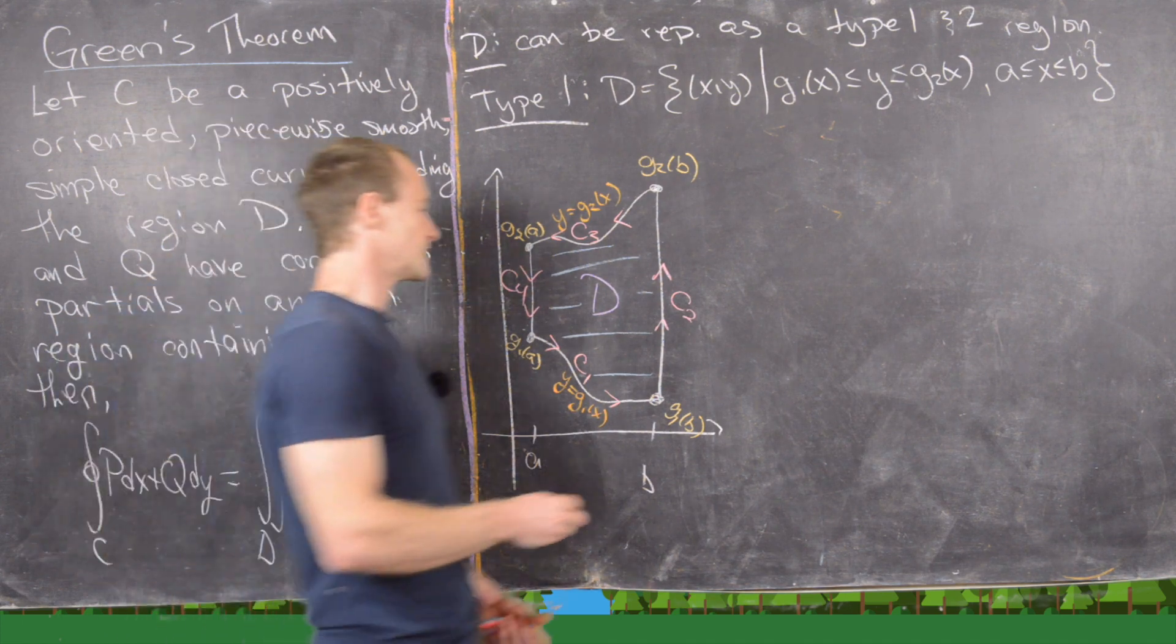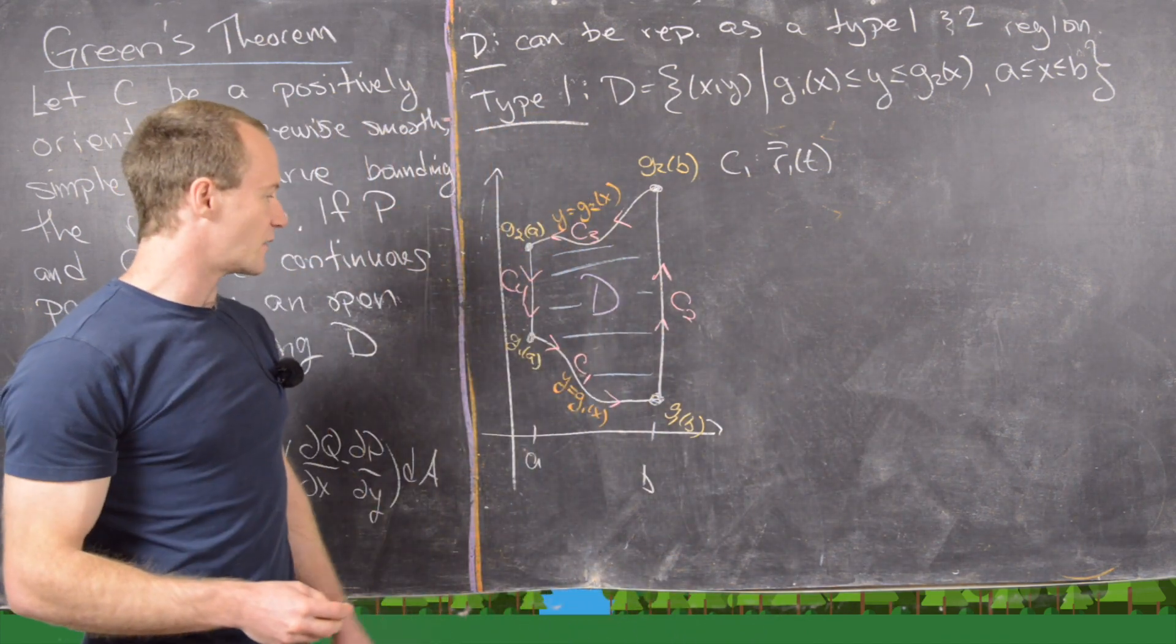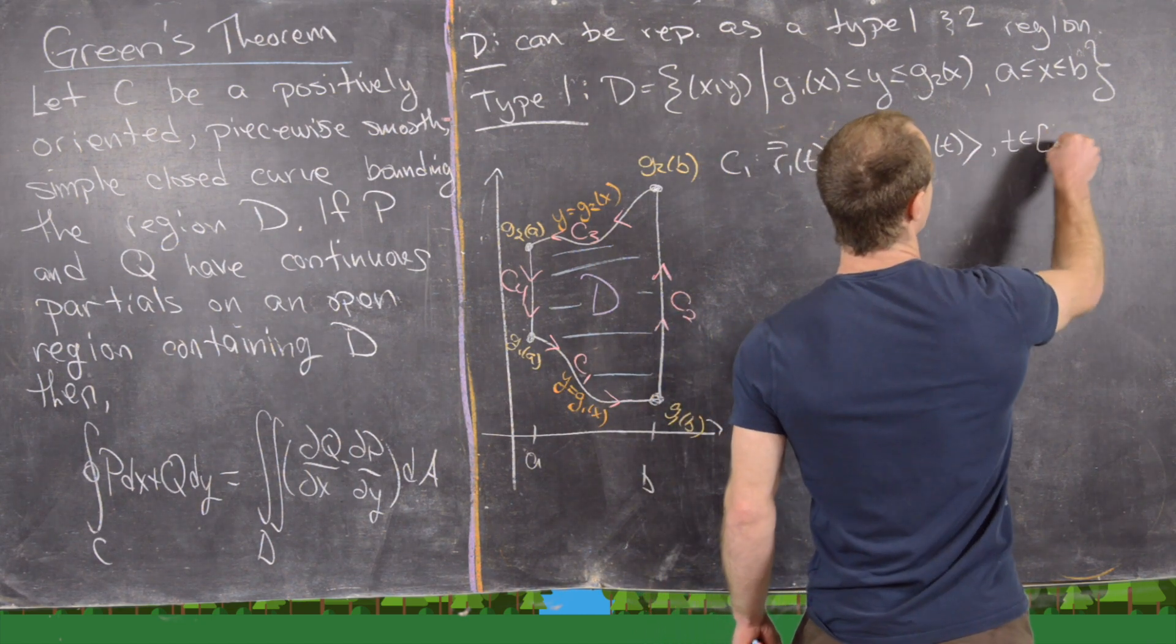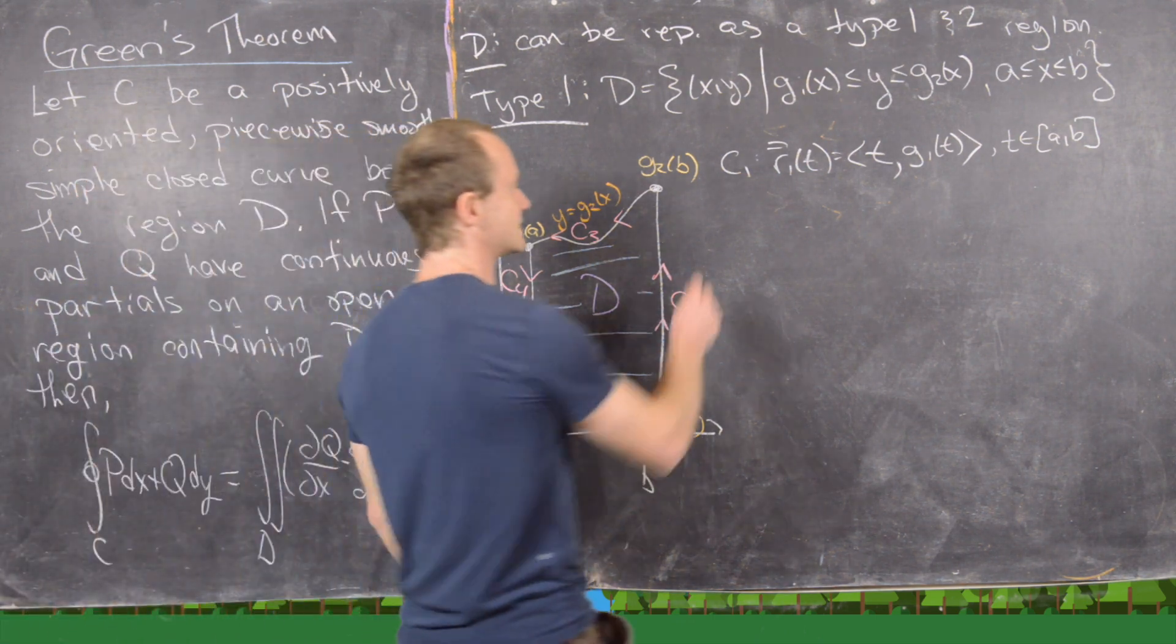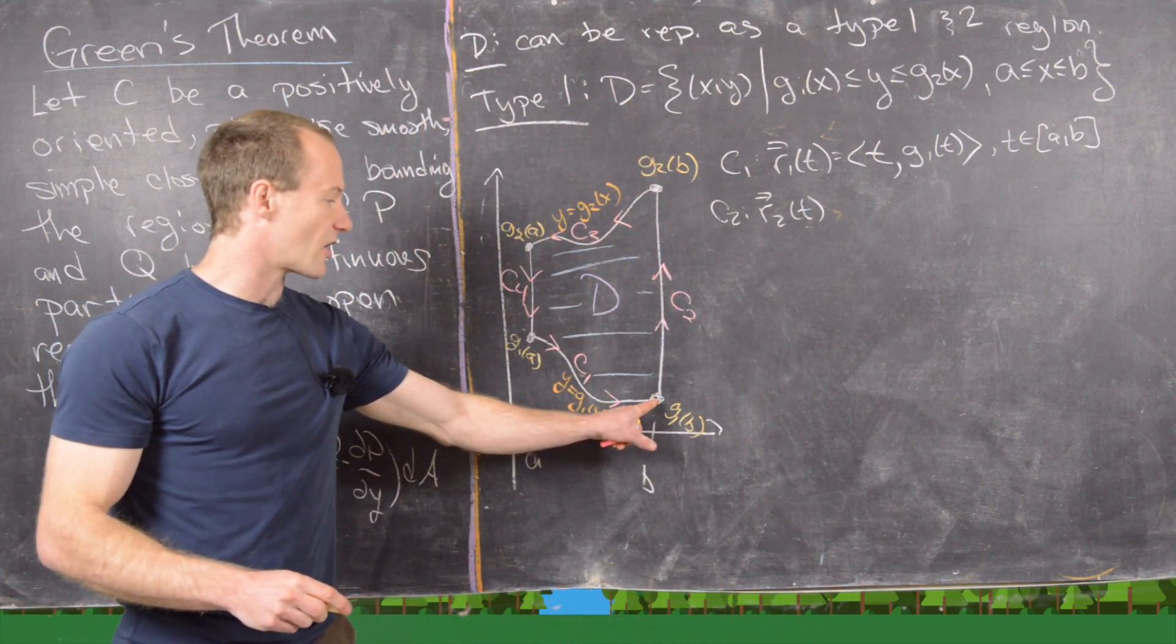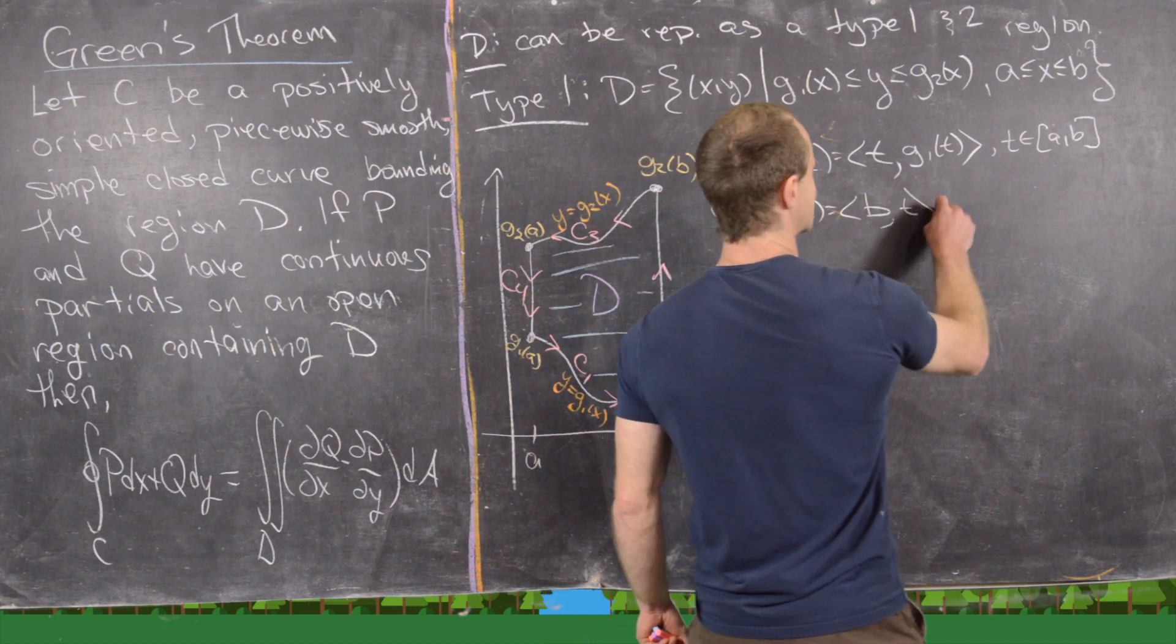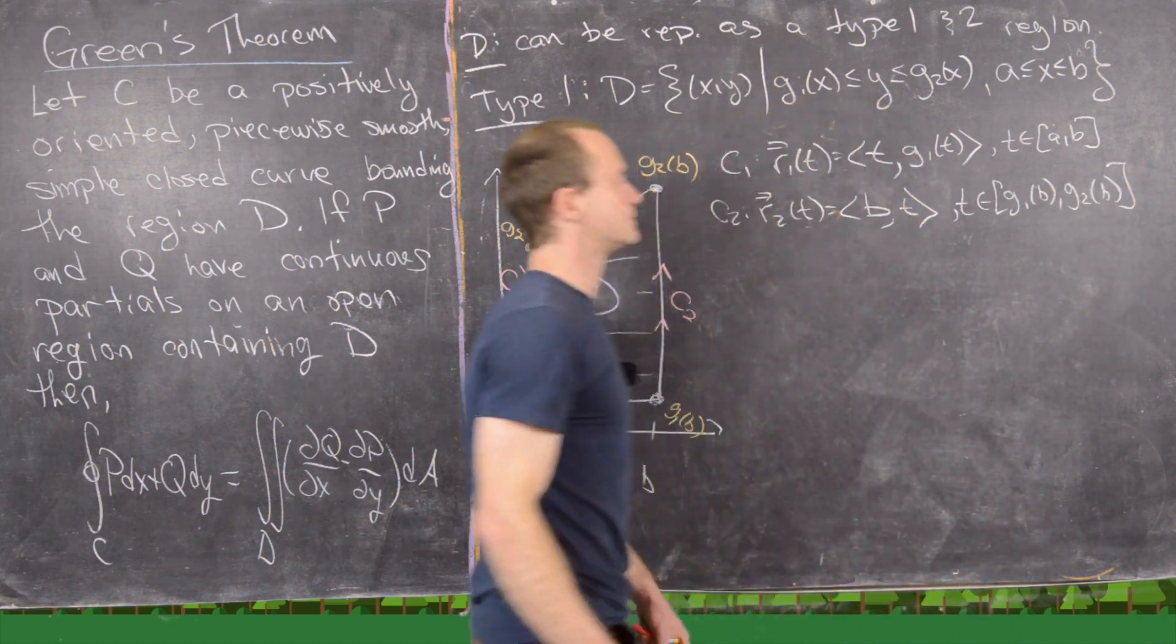And now let's parametrize each of these curves. So notice C1 can be parametrized in the following way. So R1 of T, we'll write this as a vector equation. So notice we can take T to be the x coordinate. And then we can take G1 of T to be the y coordinate. And then T is going to range between A and B. Good. So that will start here and it'll end there just as needed. Now let's look at C2. So notice C2, we can parametrize with this thing R2. And here the x coordinate is fixed at the number B. And then the y coordinate is trending between G1 of B and G2 of B. So maybe we can say that's T. And then now T is going between G1 of B and G2 of B, like that.